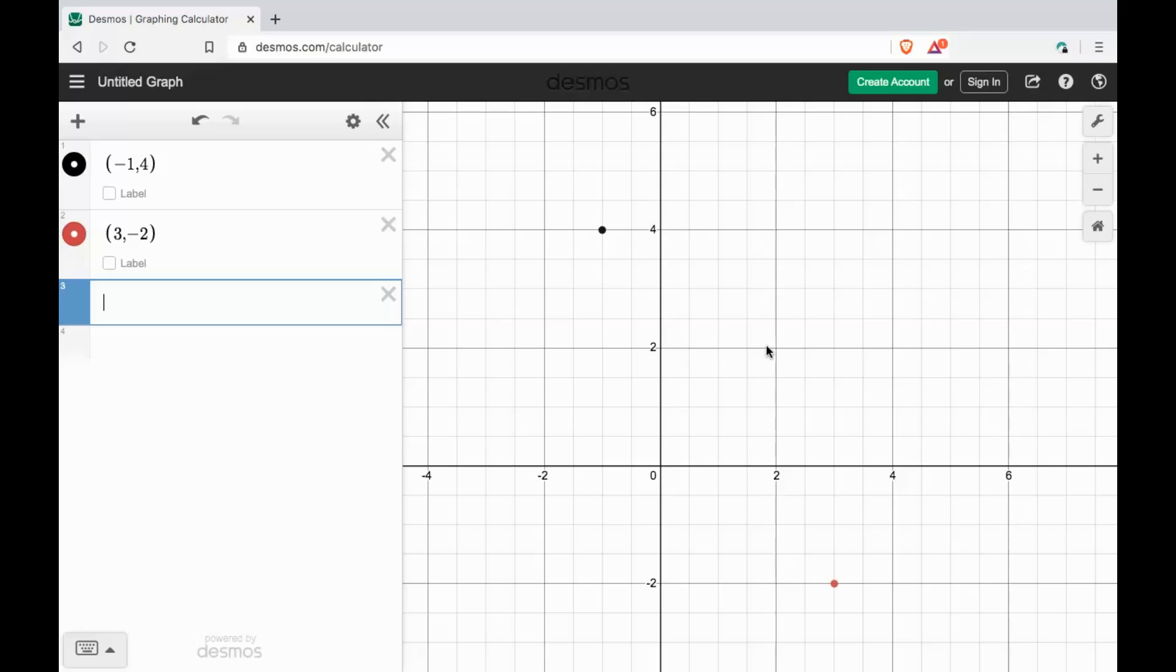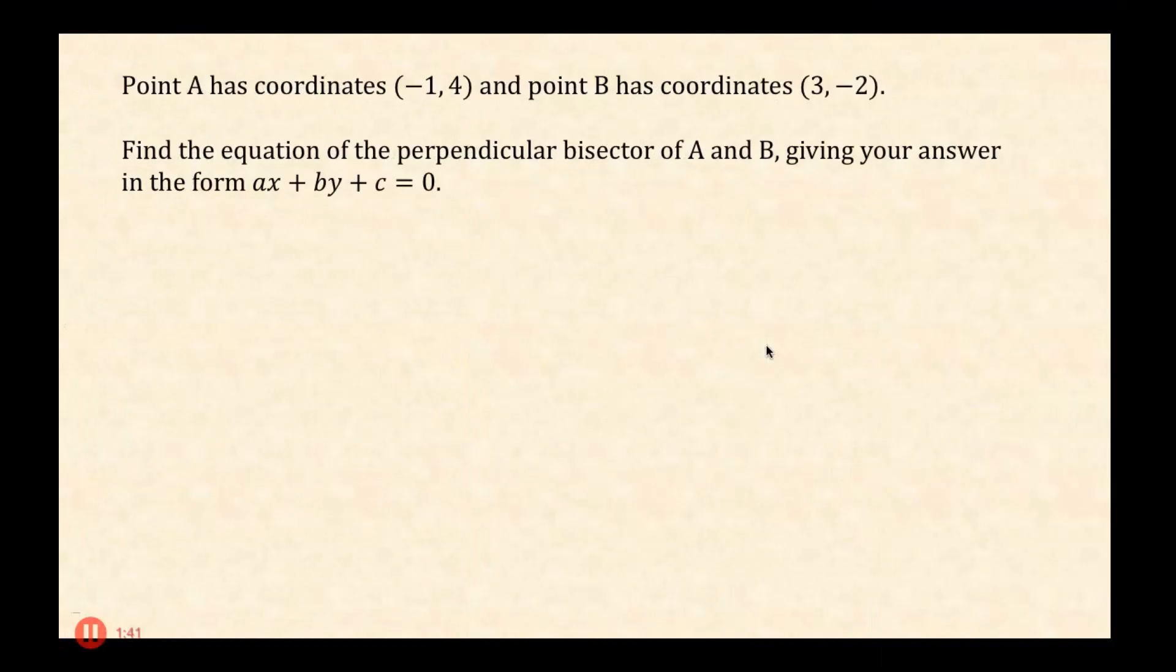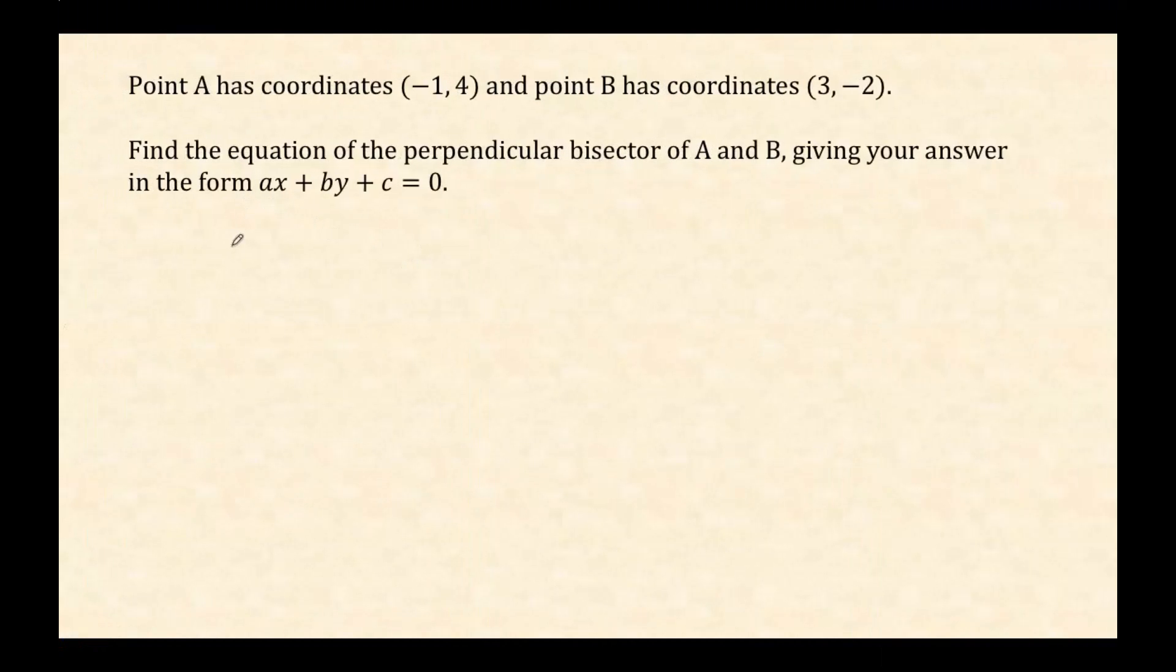Okay, so the first one we can do quite easily: the midpoint of A and B. To find the midpoint, one way I like to think about this is we can just look for the average of the x values and the average of the y values.